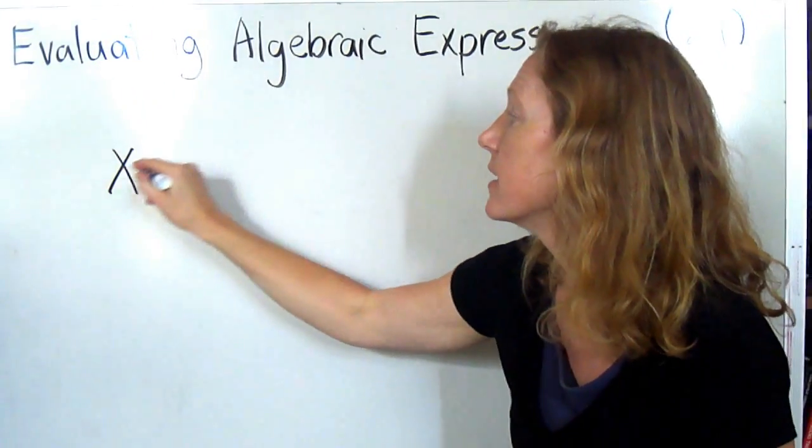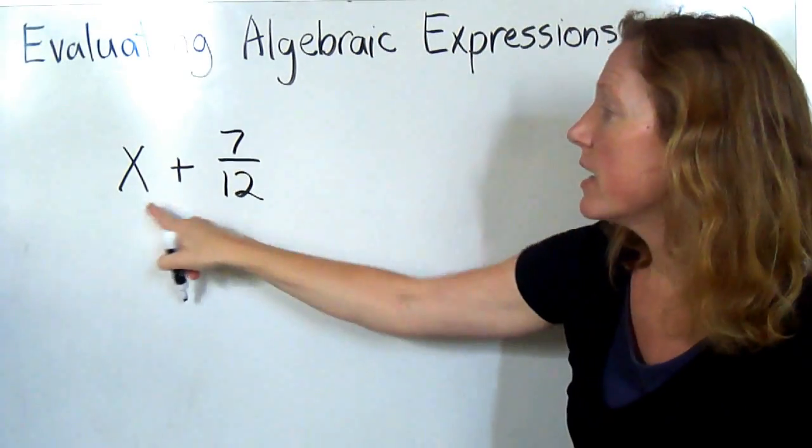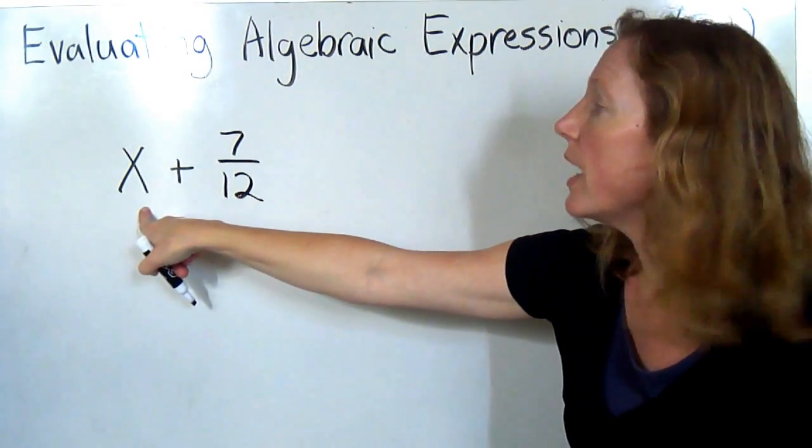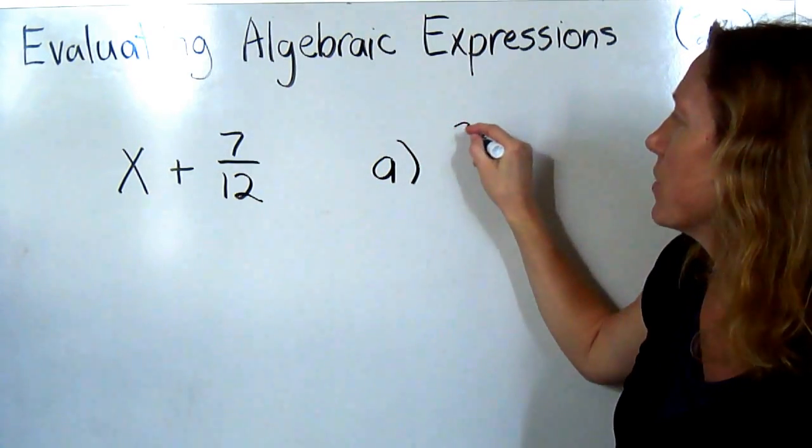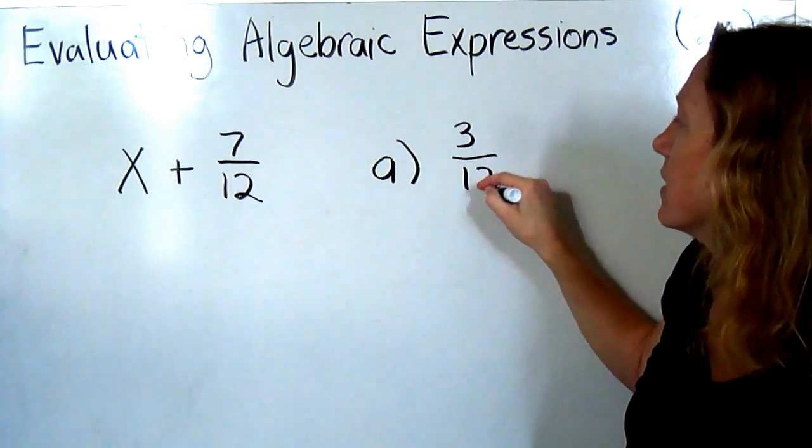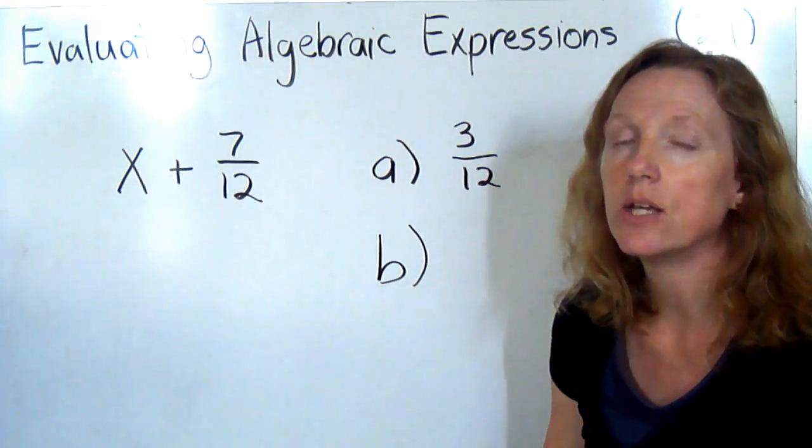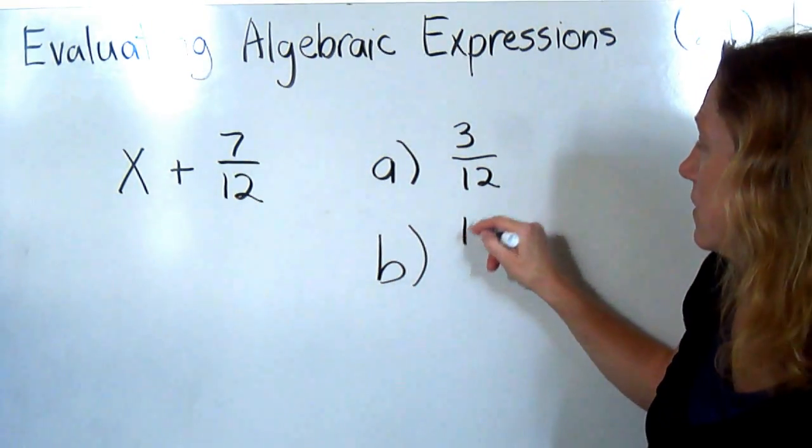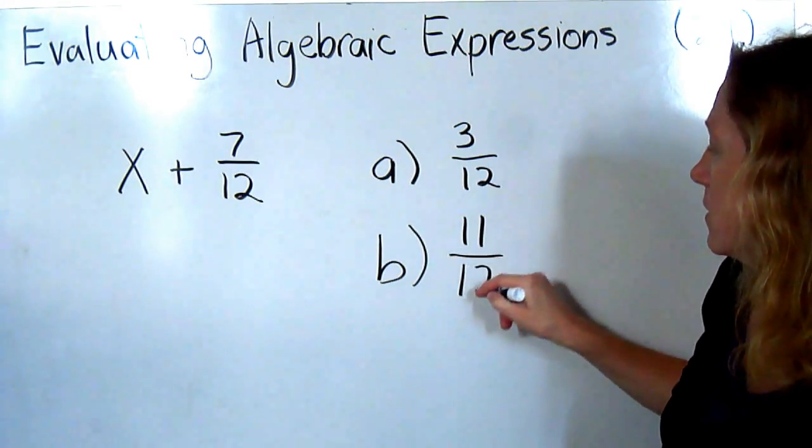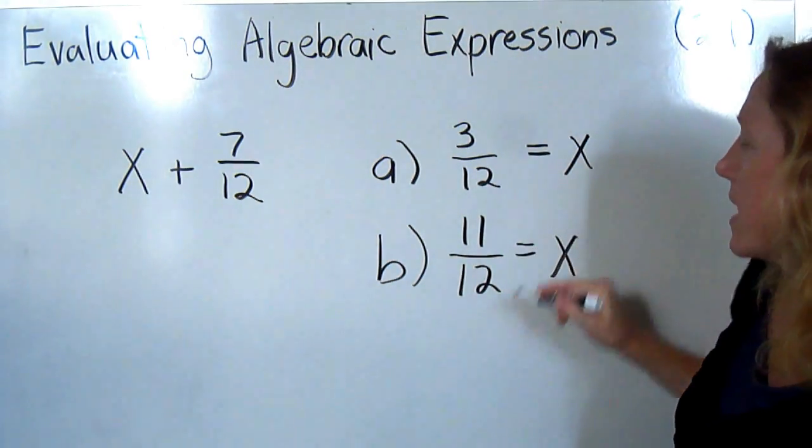So for our first example, let's use x plus 7 twelfths. And I'm going to give you two different values for x. For one value, I'm going to say x is 3 twelfths. And for another value, I'm going to say x is equal to 11 twelfths.